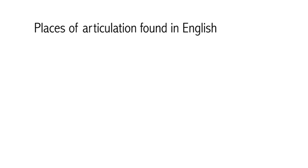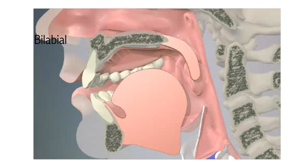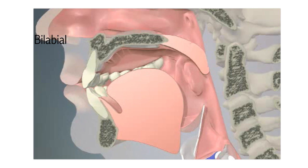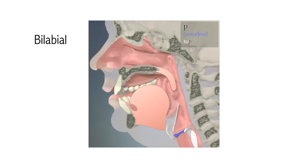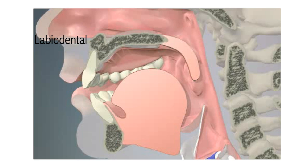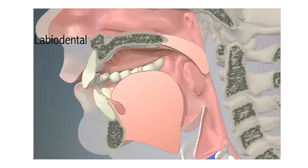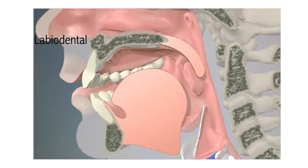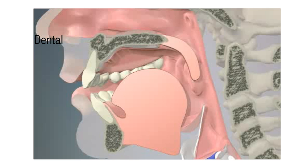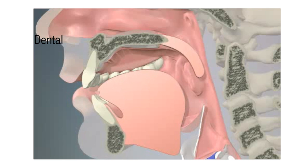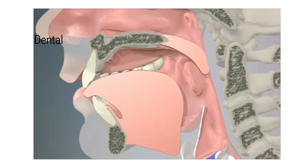These are the places of articulation we find in English. Bilabial: the bottom lip and top lip are brought together. Bilabial means using two lips, as in the first sound of 'pen.' Labiodental: the bottom lip makes contact with the top front teeth, as in the first sound of 'find.' Dental: the tip or blade of the tongue touches or comes very close to the top front teeth, as in the first sound of 'think.'